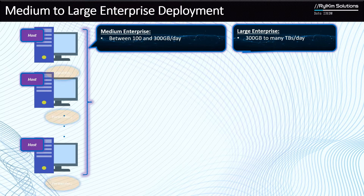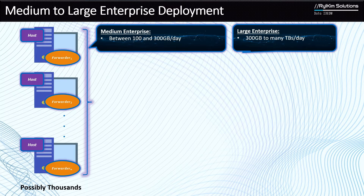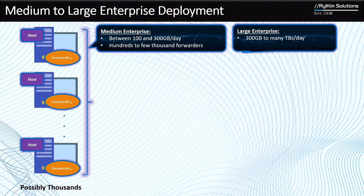The next thing to consider again is the number of forwarders. Here it is very easy to have hundreds to thousands of forwarders, because this is mostly going to be for large organizations. For medium enterprise, it's typically in the range of hundreds to a few thousand forwarders. For large enterprise deployment, it is many thousands of forwarders — basically thousands of machines in your network that you need to collect data from and send into Splunk.